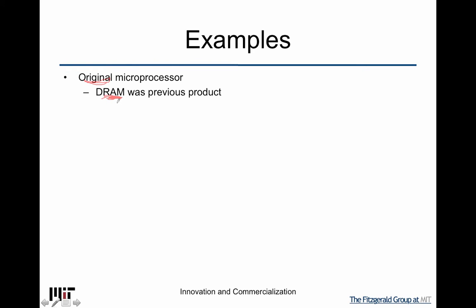When Japan got into the semiconductor market, they were making DRAMs more efficiently with higher yield. Pretty much everybody in the U.S. in DRAM started having a crisis because they were going to be annihilated. In Intel's case, they noticed they had something where they had put multiple functionalities together on a single chip — originally for a calculator company in Japan. They were calling this a microprocessor. It was a small processing unit with multiple different areas.